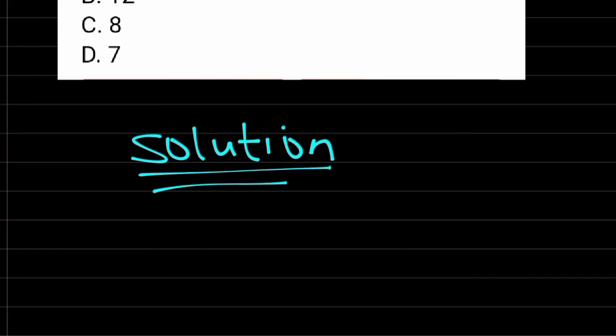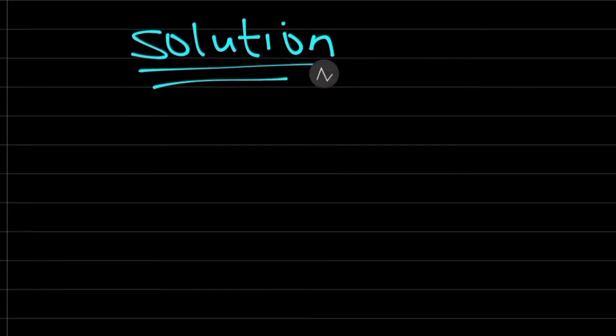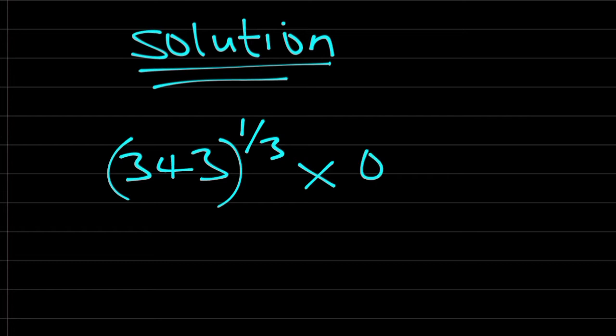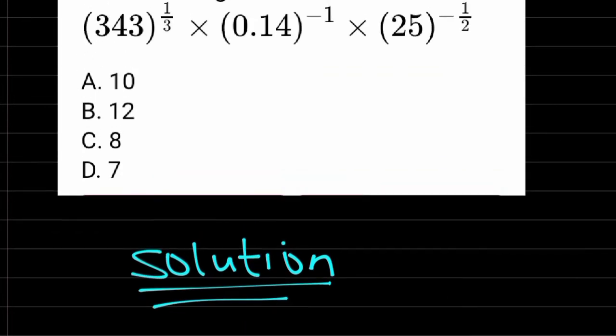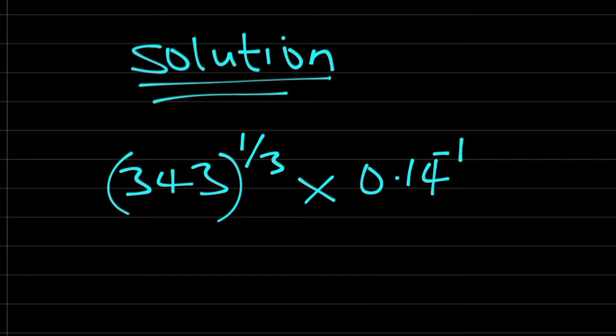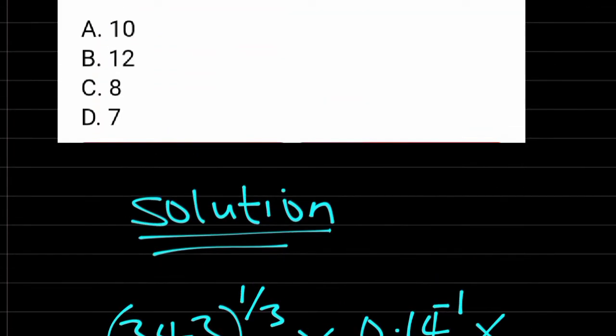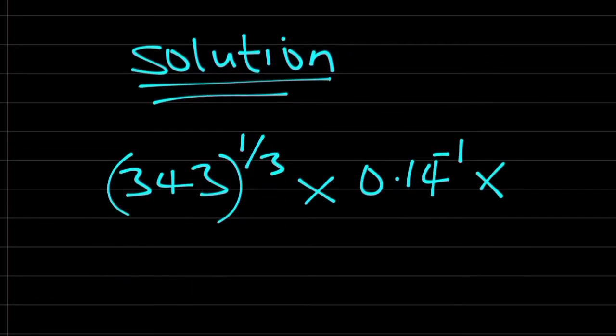Solution. 343 raised to the power of 1 over 3 times 0.14 raised to the power of minus 1 then times 25 raised to the power of minus half.